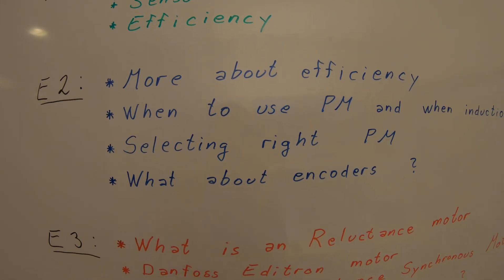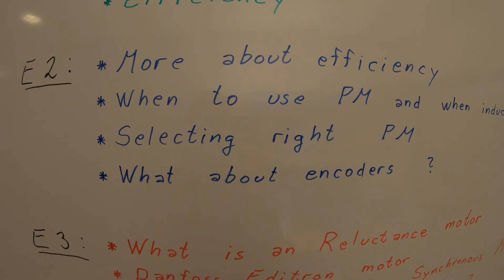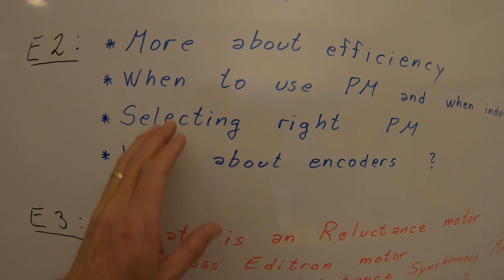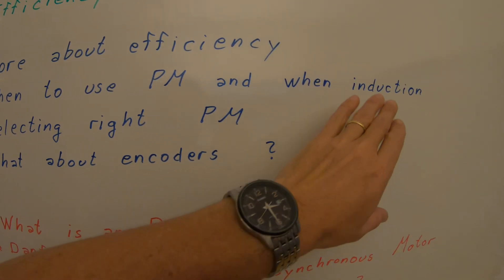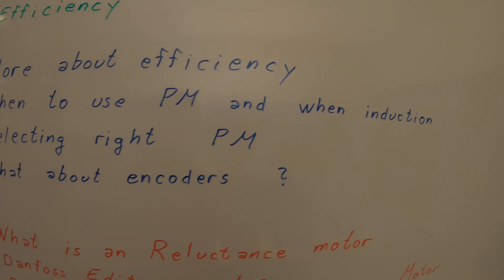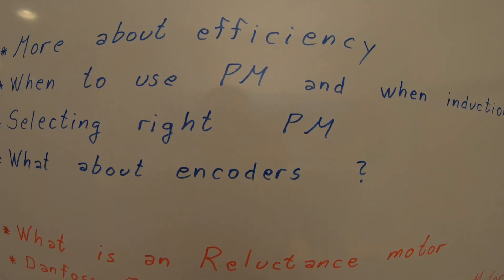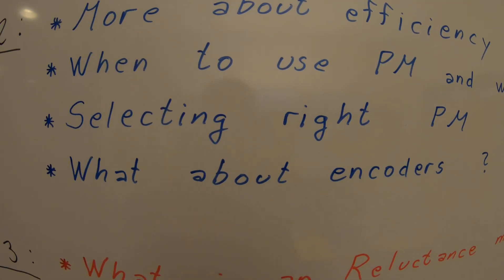In episode two we go more into efficiency and also when to use a permanent magnet motor and when you should use an induction motor, selecting the right type of permanent magnet motors, and what about encoders?